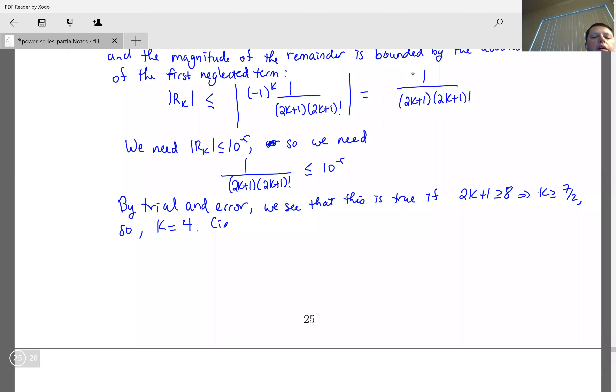I need to use S for the partial sum of the first four terms. So the first four terms, it's going to give us: the first term was 1, we have 1 minus 1 over 3 times 3 factorial plus 1 over 5 times 5 factorial, minus 1 over 7 times 7 factorial.